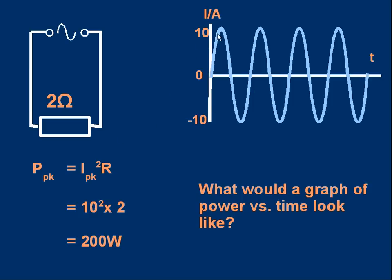That's 10 amps squared times 2 ohms, which is 200 watts. That means when the current is 10 amps, the power is 200 watts.